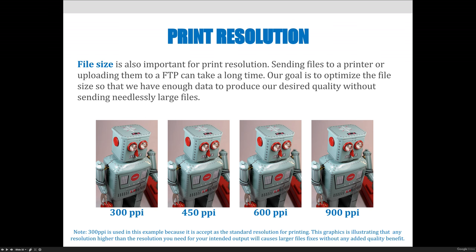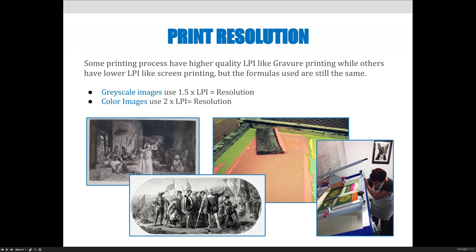Print resolution is much higher than web resolution. Web is 72, and print resolution is 300 PPI if we're looking at it on screen, or DPI if we've printed it. We want to have 300 pixels per inch. But just like web resolutions, we don't want anything bigger than 300 — or whatever the calculation determined by using these formulas.